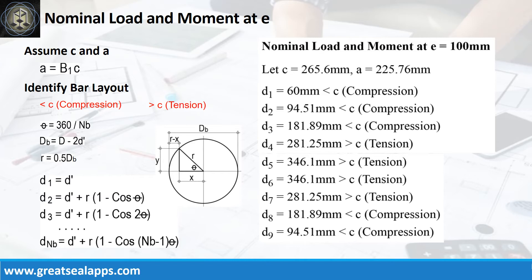D1 equals 60 mm — less than neutral axis C, compression. D2 equals 94.51 mm — less than C, compression. D3 equals 181.89 mm — less than C, compression. D4 equals 281.25 mm — greater than C, tension. D5 equals 346.1 mm — greater than C, tension.